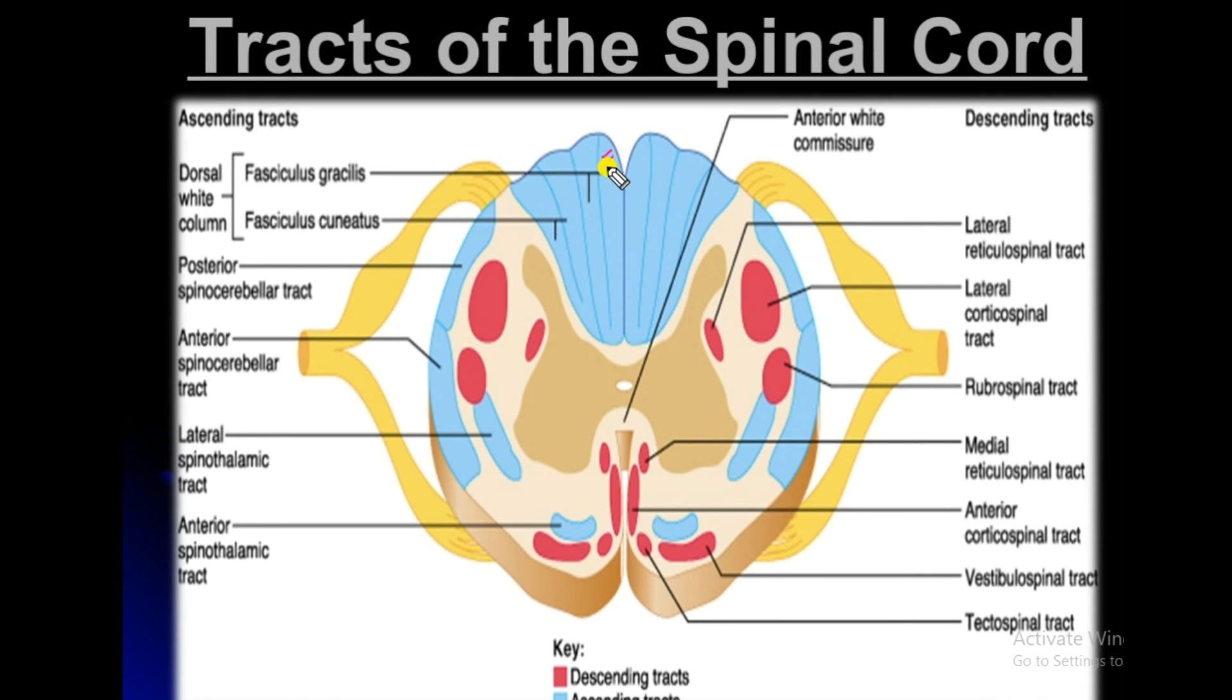Tracts of the spinal cord: we have the gracilis and we have the cuneatus, and we have the posterior and anterior spinocerebellar tract and the anterior and lateral spinothalamic tract.